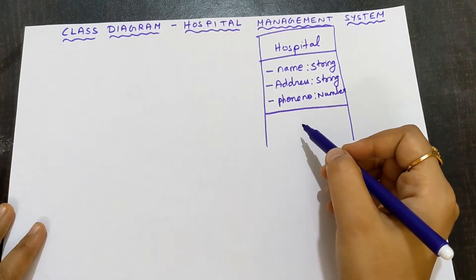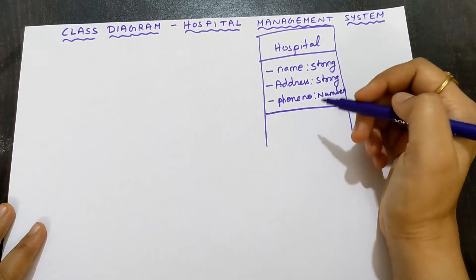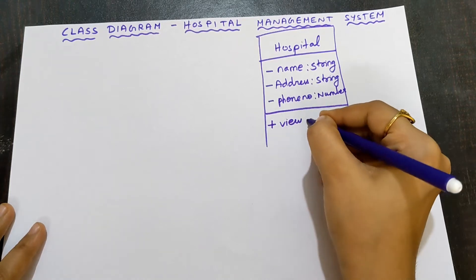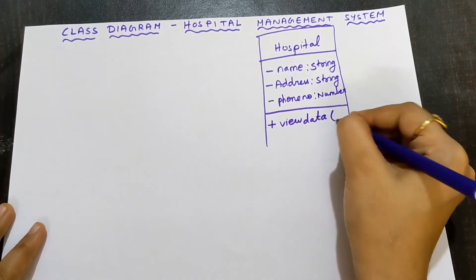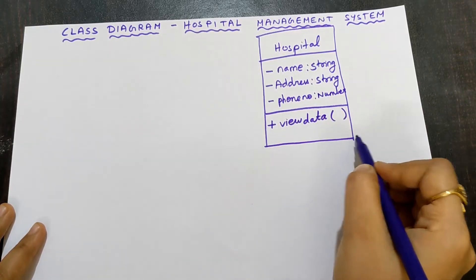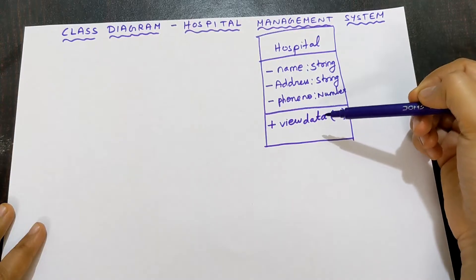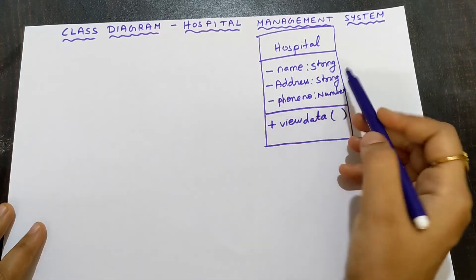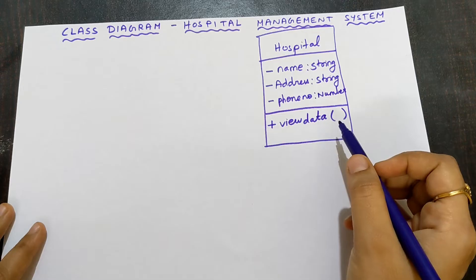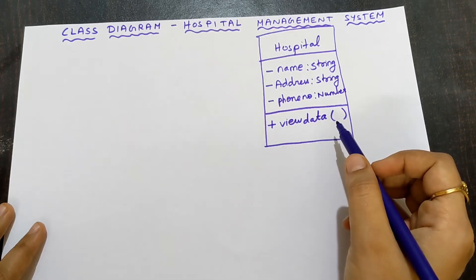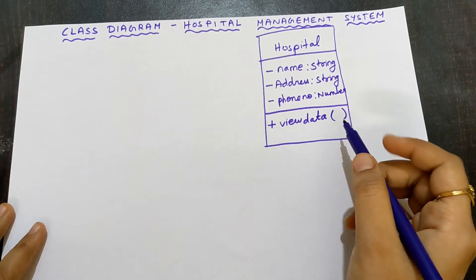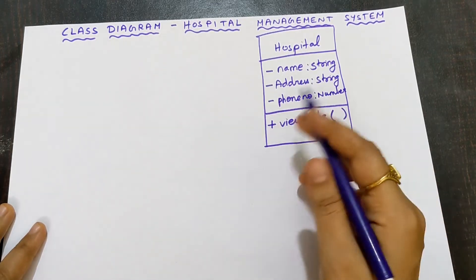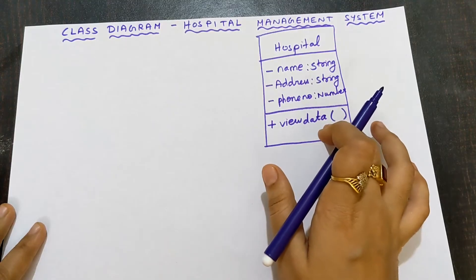The third box is for operations — what this hospital can do. I put the operation symbol, then write 'view data()' with brackets. This is the third box, so the class is divided into three total parts. View data means you can view all data of the hospital: regarding medicines, availability of doctors, receptionists, and everything — all viewable using this operation of the hospital class.